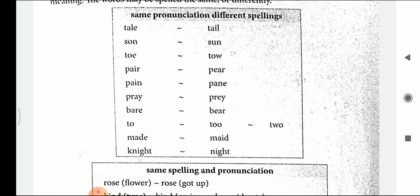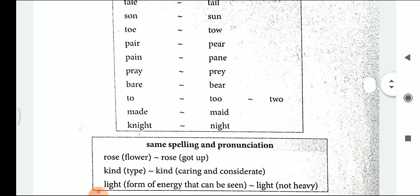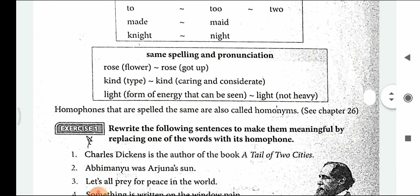T-O, 'to', T-O-O, 'too', and T-W-O, 'two'. M-A-D-E, 'made', and M-A-I-D, 'maid'. K-N-I-G-H-T, 'knight', and N-I-G-H-T, 'night'. Now let's see the same spelling and pronunciation: R-O-S-E, 'rose', means a flower, and 'rose' also means to get up. K-I-N-D, 'kind', means a type, and also means caring and considerate. L-I-G-H-T, 'light', means the form of energy that can be seen, and also means not heavy.